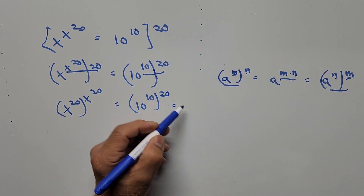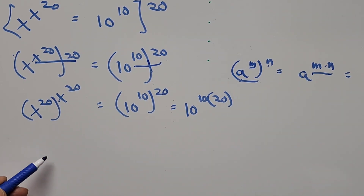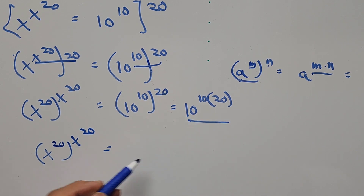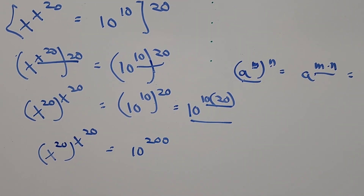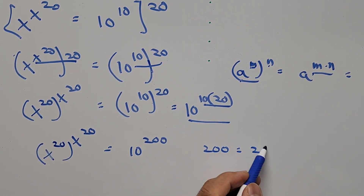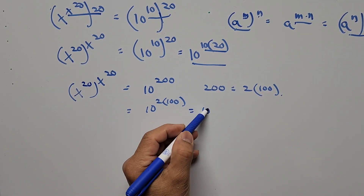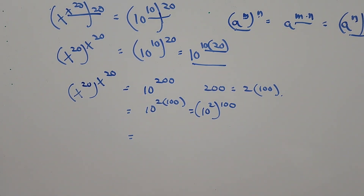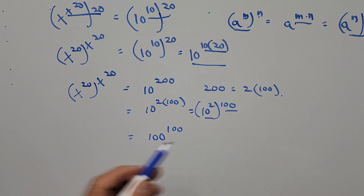That is 10 to the power of 10 times 20, so the equation becomes x to the power of 20, to the power of x to the power of 20, equals 10 to the power of 200. Now 200 can be written as 2 times 100, so the right-hand side becomes 10 to the power of 2 times 100, which is the same as 10 squared to the power of 100. Since 10 squared equals 100, the right-hand side simplifies to 100 to the power of 100.